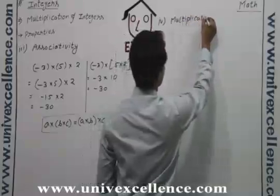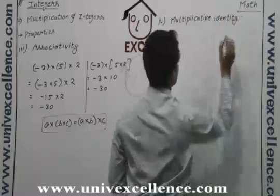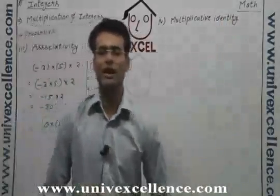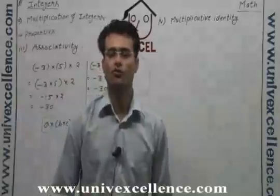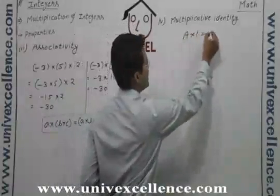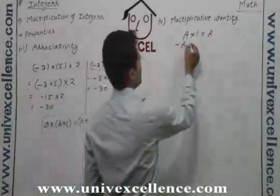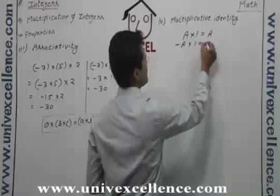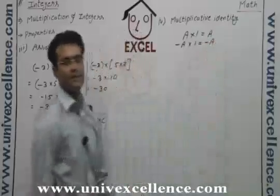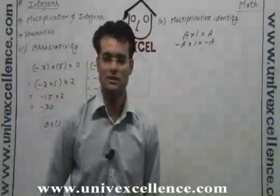Multiplicative identity. Yes, we have a multiplicative identity for every type of number. That is 1, because if 1 is multiplied by any number, you will have the same number again. If you multiply it by minus A, you will have a minus A again. So there is the existence of multiplicative identity for the integers.